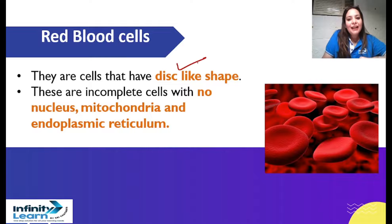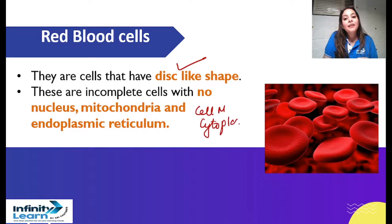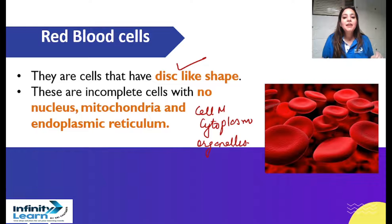This hemoglobin pigment is made by iron. We will discuss this. In RBCs, the shape of the RBCs is disc-like. Now in any cell, what happens? There is cell membrane, cytoplasm, and organelles. But this cell is a very important cell. How can I miss that?